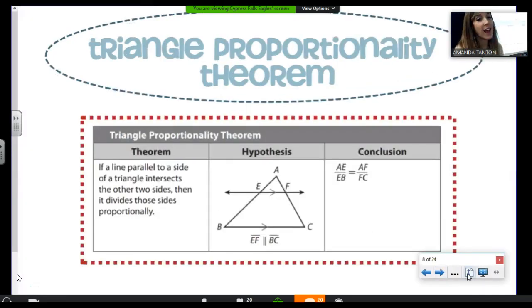If a line parallel to the side of a triangle intersects the two other sides, then it divides the sides proportionally. So, the hypothesis is if it's parallel, the conclusion is then the pieces are proportional. If parallel, then pieces proportional.